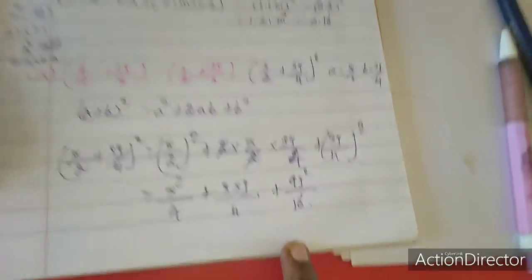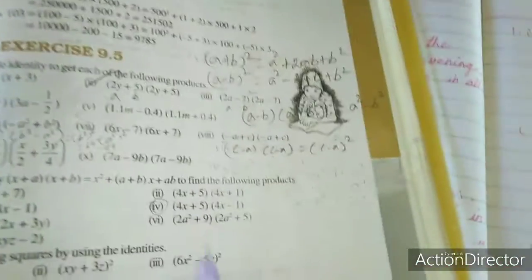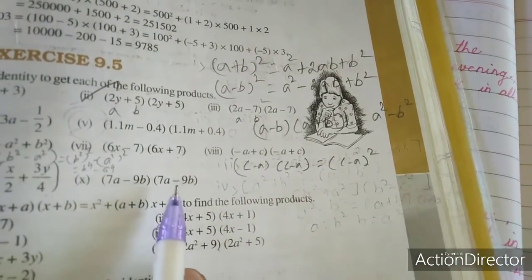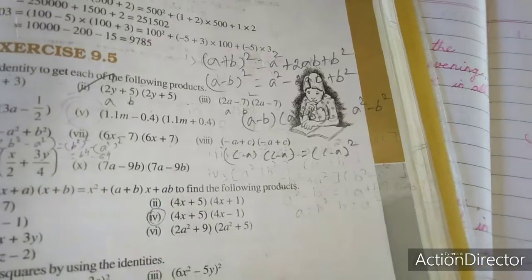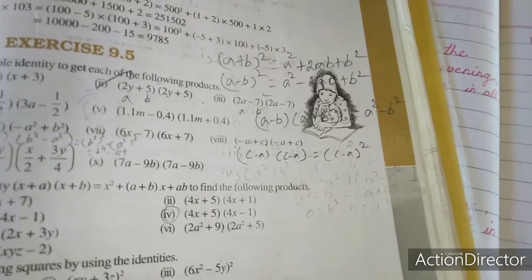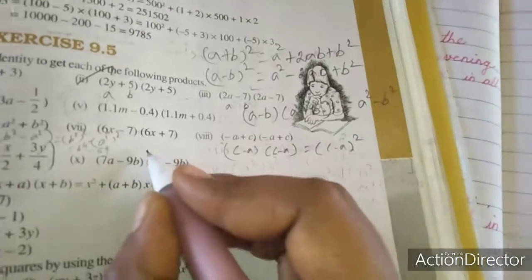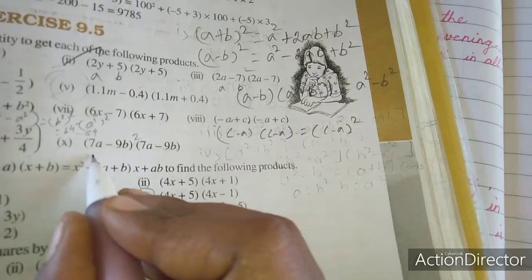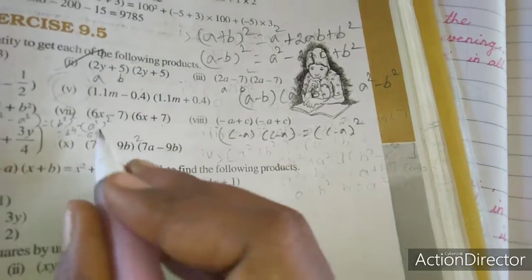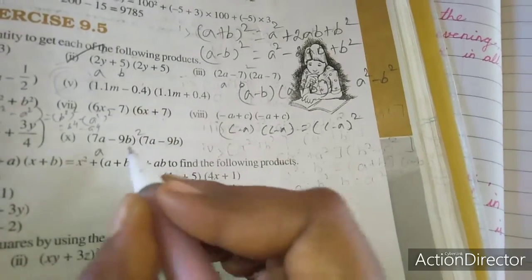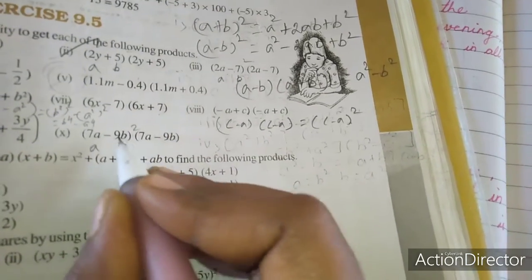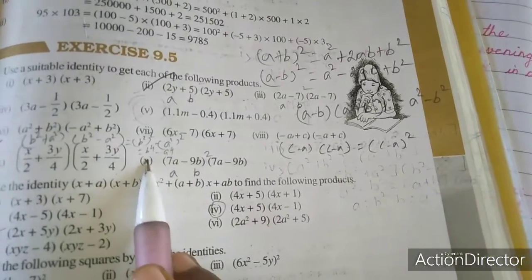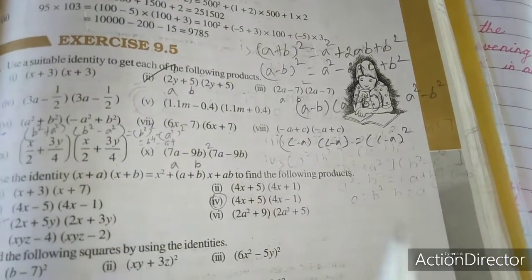Now we move to the tenth sum: (7a - 9b)(7a - 9b). This is written as (7a - 9b)². The formula is (a - b)². Here a = 7a and b = 9b. This is homework for you. Up to this, the first question is completed.